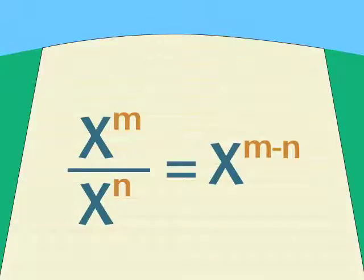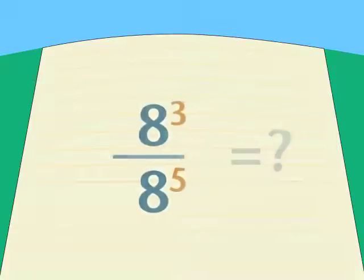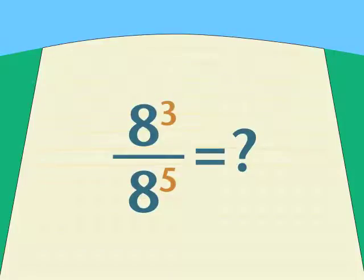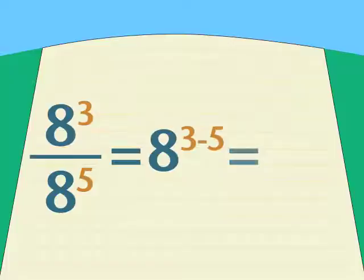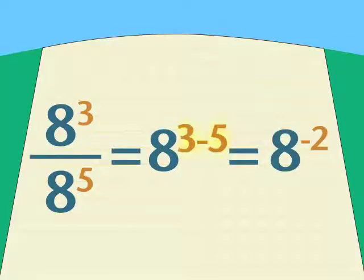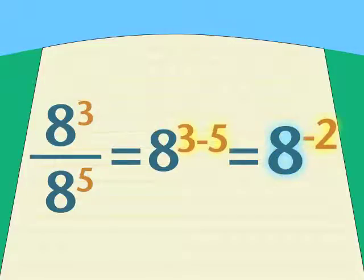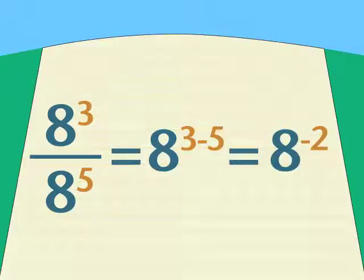You've got it: you subtract exponents, top minus bottom. But some expressions could be a problem. What if the higher power, the larger exponent, is on the bottom? Apply the rule and what do we get? A headache, because 3 minus 5 is negative 2. 8 to the power of negative 2? What in the world does that mean? We can't let 8 happen negative 2 times and then multiply them together.